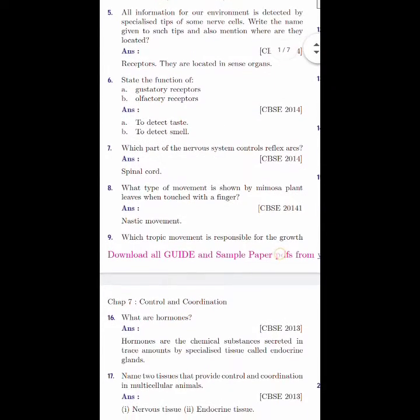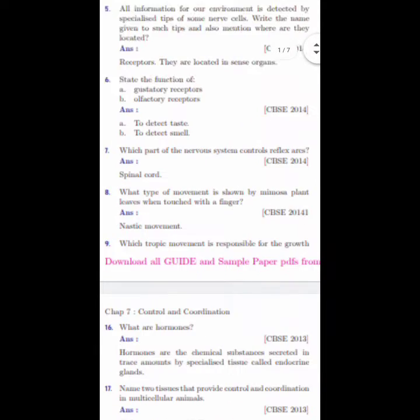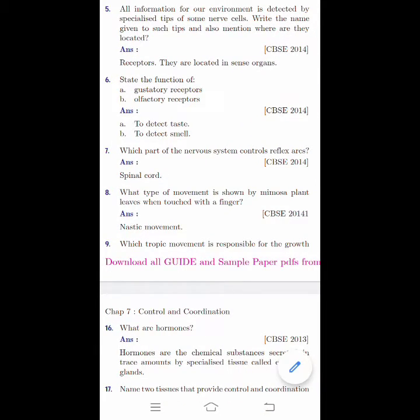All the information for our environment is detected by specialized tips of some nerve cells. Write the names given to such tips and also mention where are they located. That is receptors. All the information for our environment is detected by specialized tips of some nerve cells, which is receptors, like olfactory receptors you people have studied.